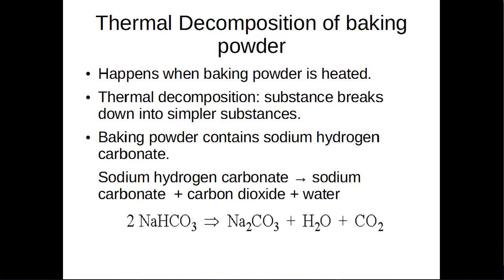Baking powder contains sodium hydrogen carbonate. For the exam we need to know the word equation and the symbol equation. Sodium hydrogen carbonate goes to sodium carbonate, carbon dioxide, and water. The symbol equation is: 2NaHCO₃ → Na₂CO₃ + H₂O + CO₂. Baking powder is used in baking cakes because when the sodium hydrogen carbonate is heated, the thermal decomposition breaks it down, which releases carbon dioxide. Carbon dioxide makes the cake rise.